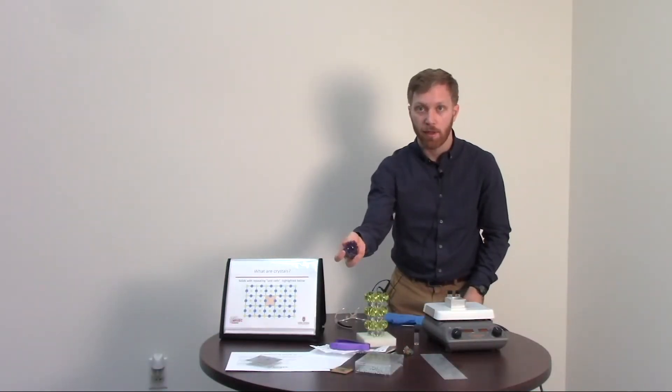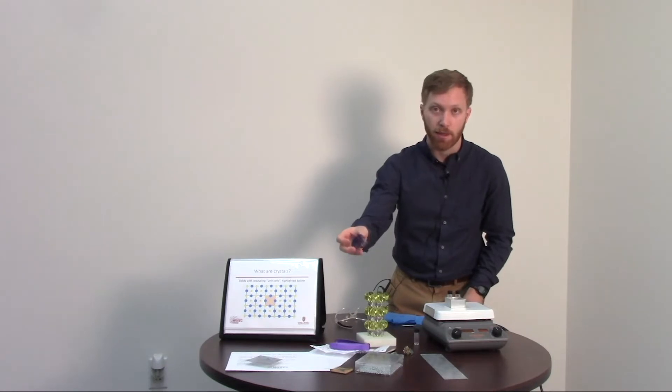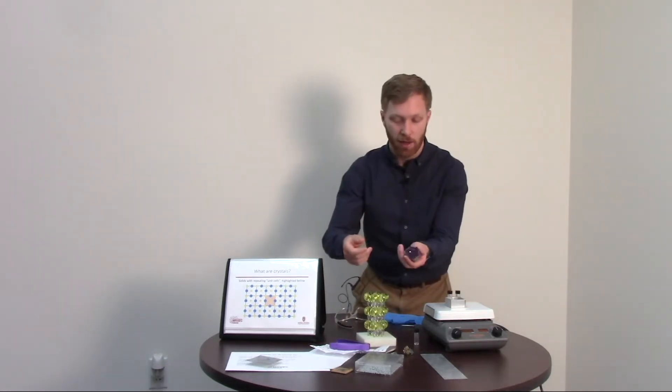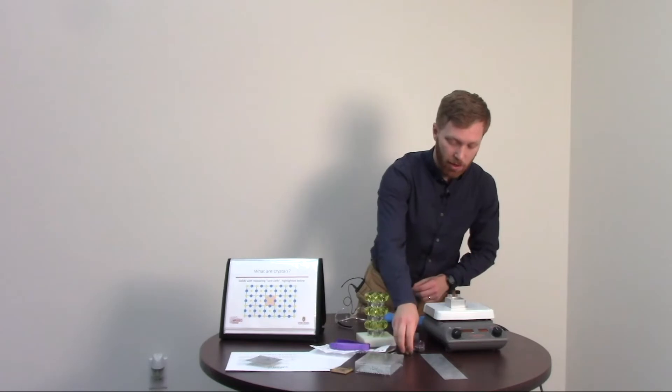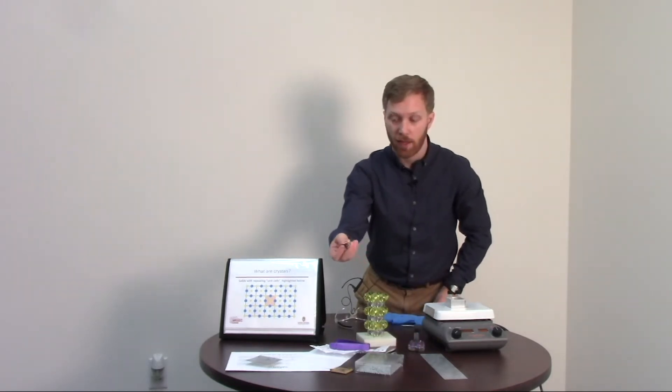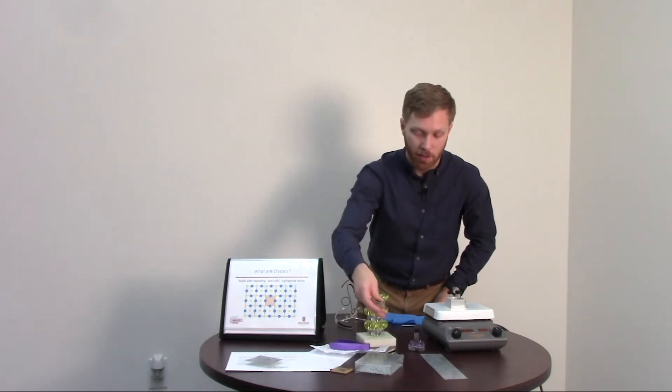So, have you ever seen a crystal like one of these before? This is an amethyst crystal and it's got a lot of nice colors on it. What about a crystal like this one? This is called bismuth and it's got a lot of really pretty colors on it too.